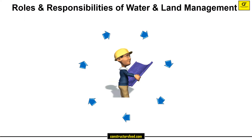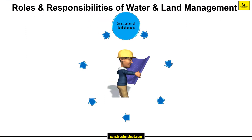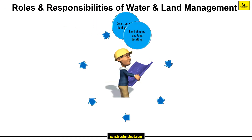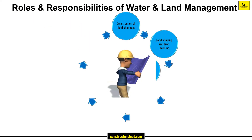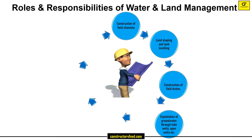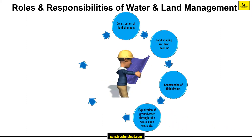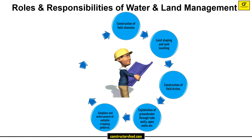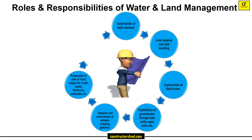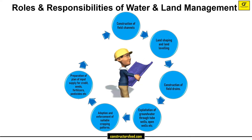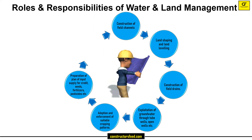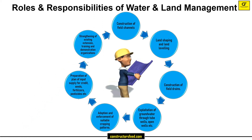Some of the Roles and Responsibilities of Water and Land Management include: Construction of Field Channels; Land Shaping and Land Levelling; Construction of Field Drains; Exploitation of Ground Water Through Tube Wells, Open Wells, etc.; Adoption and Enforcement of Suitable Cropping Patterns; Preparation of Plan of Input Supply for Credit, Seeds, Fertilizers, Pesticides, etc.; Strengthening of Existing Extension, Training and Demonstration Organizations.